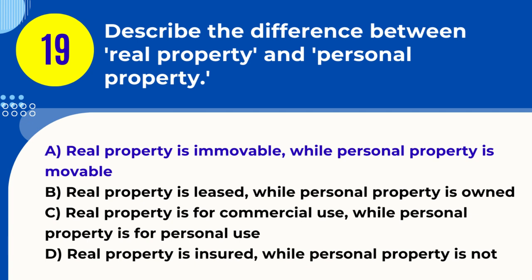Explanation. Real property refers to land and anything permanently attached to it, like buildings or trees, making it immovable. Personal property, on the other hand, includes movable items like furniture, vehicles, or jewelry.